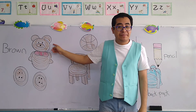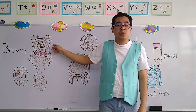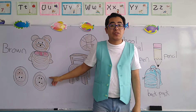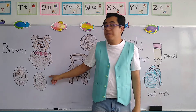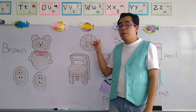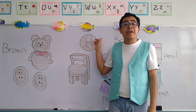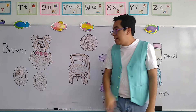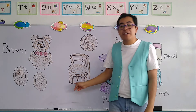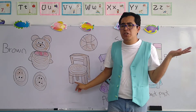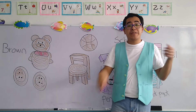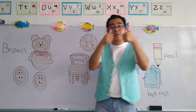Bear. The bear is color brown. Buttons. Buttons are color brown. Ball. The ball is color brown. And finally the chair — what's the color of the chair? Color brown. Very good. Excellent. Thumbs up.